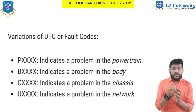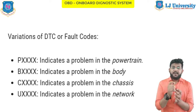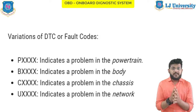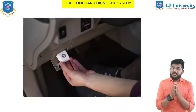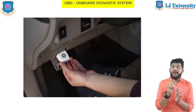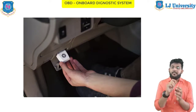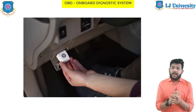Different DTC code categories are as follows: codes starting with 'P' indicate a problem in the powertrain; 'B' indicates a problem in the body; 'C' indicates a problem in the chassis; and 'U' indicates a problem in the network. You can also access the vehicle's identification number (VIN), calibration identification numbers, emission control system counters, and ignition counters. A mechanic can connect a scanning tool to the car through the OBD port and read all the fault codes to analyze the problem.